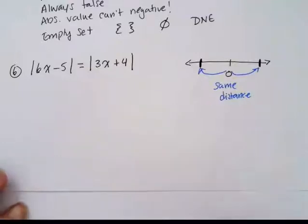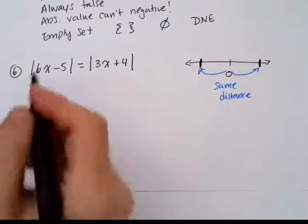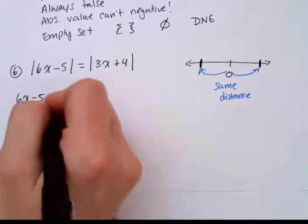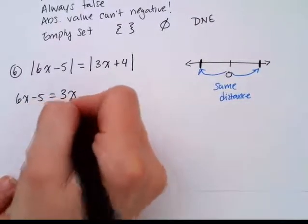The two equations are going to tell us that either the two expressions inside are equal to each other. So 6x minus 5 is equal to 3x plus 4.